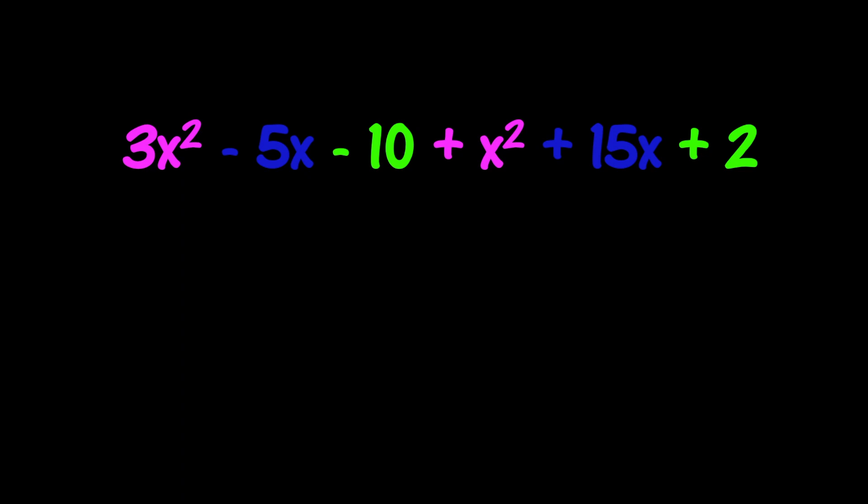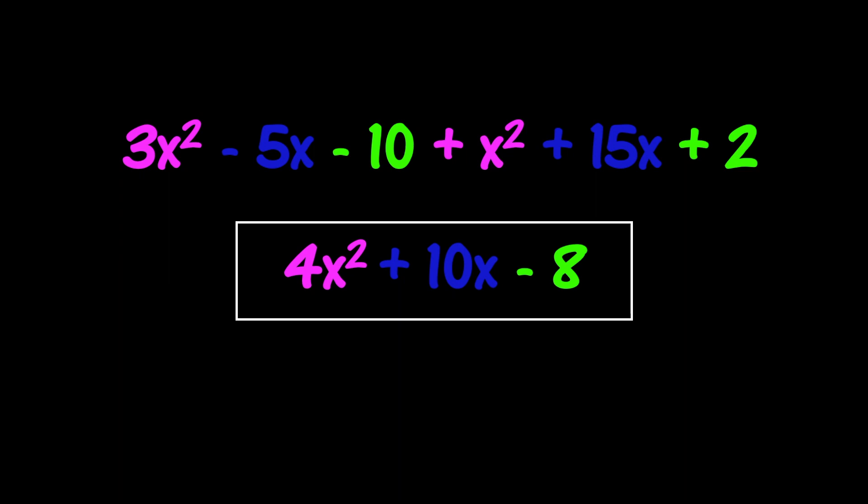Okay, so after combining like terms, the simplified expression is 4x squared plus 10x minus 8. The 4x squared comes from adding 3x squared and 1x squared, or 3 plus 1.